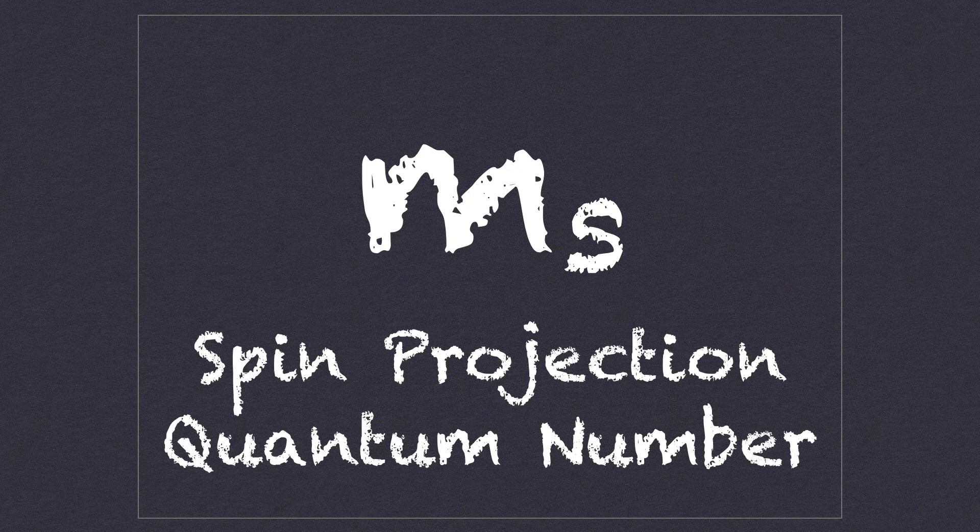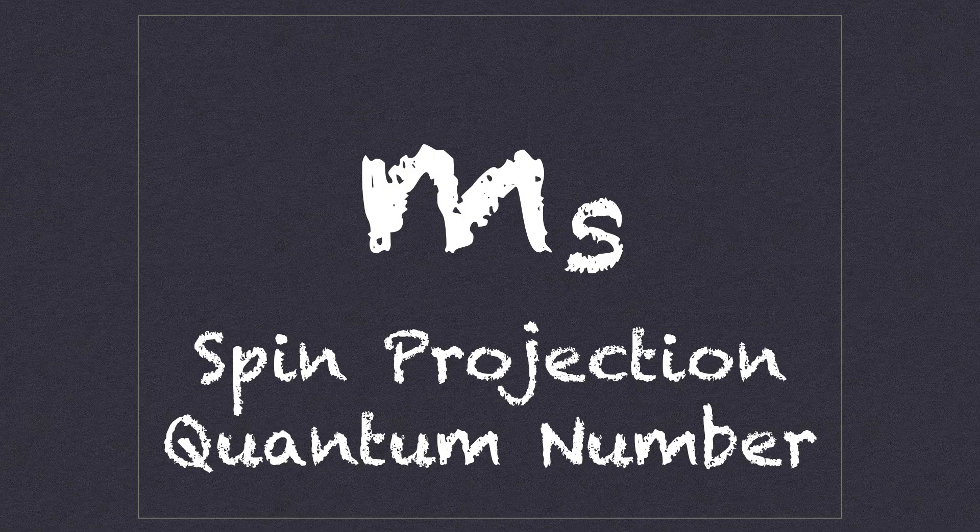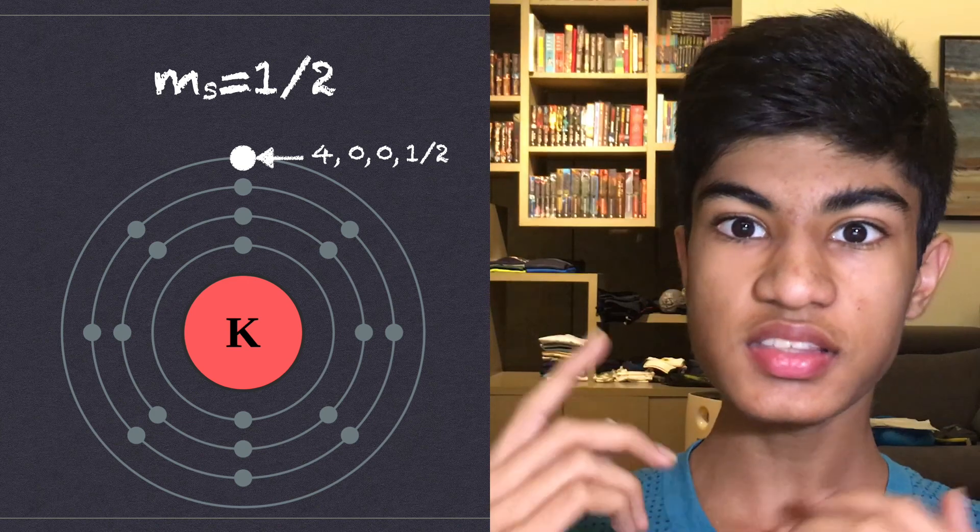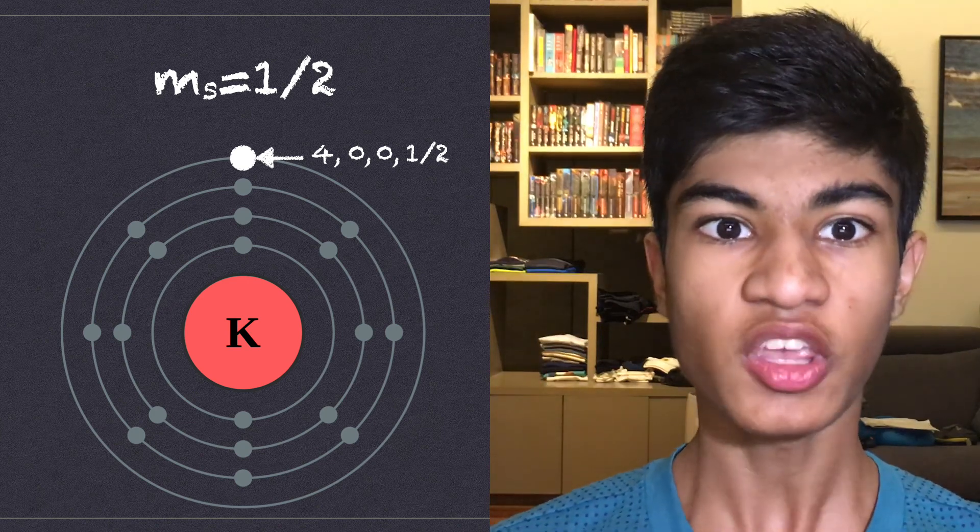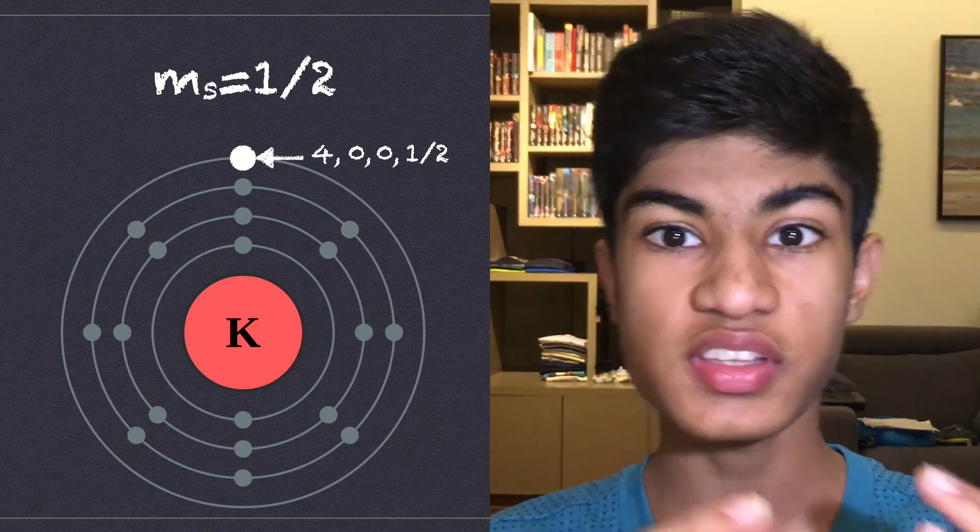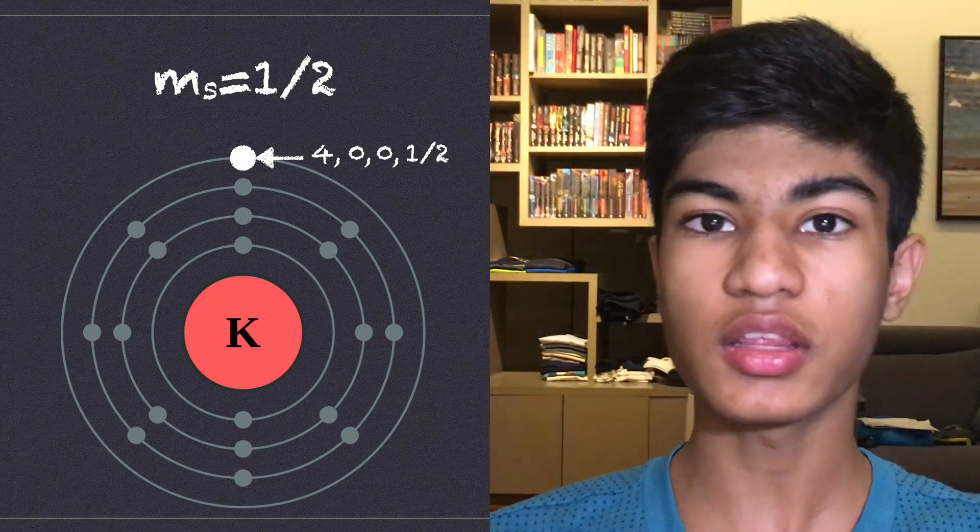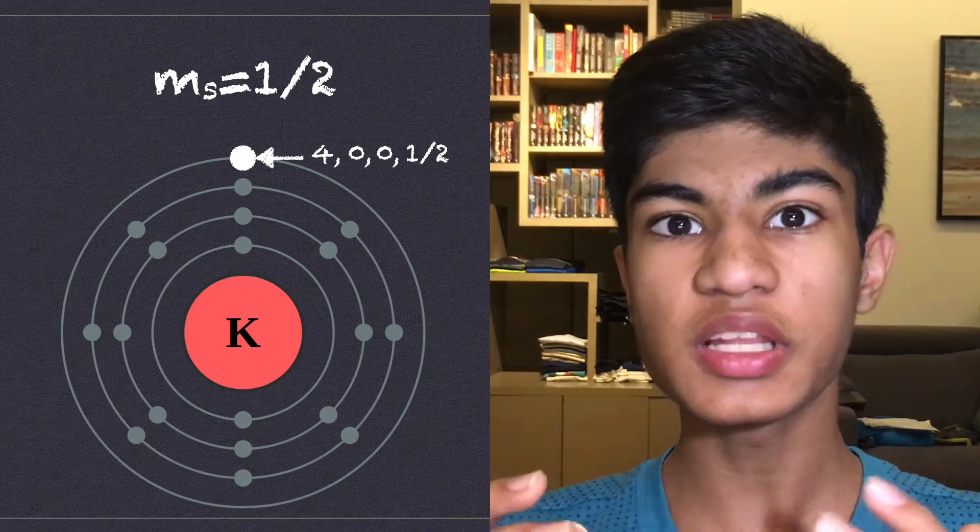The fourth quantum number, Ms, the spin projection quantum number takes care of this value. The value in this case is half and not minus half because it's the first electron in its orbital. While technically this could be both half or minus half as the value is randomly determined, we usually use half as the value for the first electron in orbit simply because it's simpler.